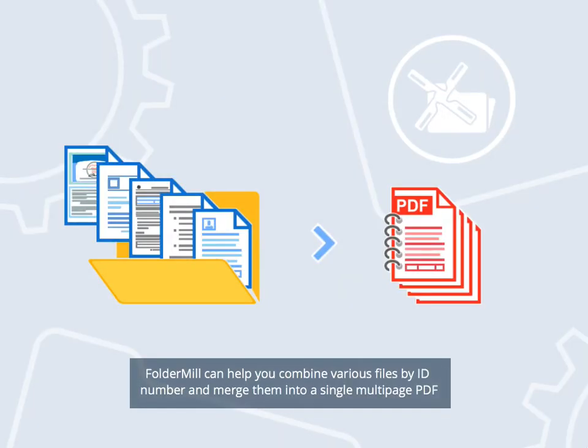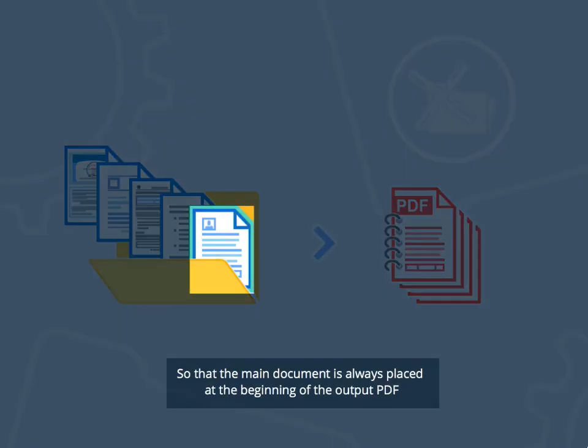FolderMill can help you combine various files by ID number and merge them into a single multi-page PDF, so that the main document is always placed at the beginning of the output PDF.